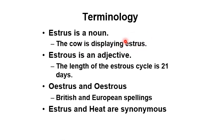Estrous, spelled E-S-T-R-O-U-S, is considered an adjective. It refers to the length of the estrous cycle. For cows, the length of the estrous cycle is 21 days — from one estrus to another estrus.